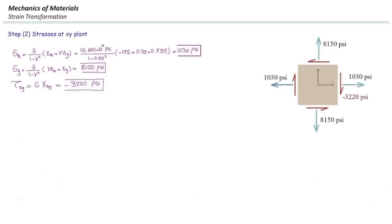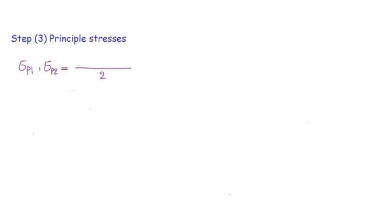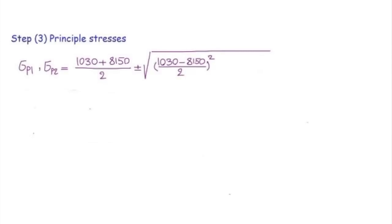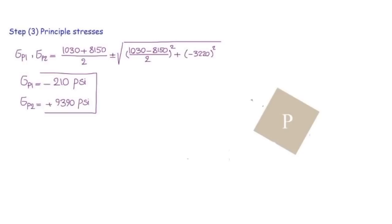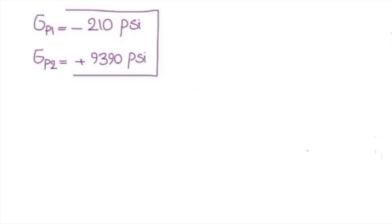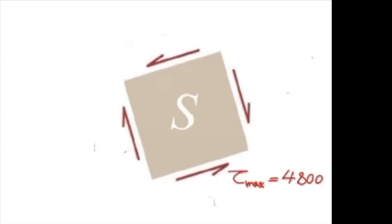Principal stresses are calculated from: σp1,p2 = (σx + σy)/2 ± √[((σx − σy)/2)² + τxy²]. Plugging in the values gives σp1 = +9,390 psi and σp2 = −210 psi. On the principal plane we have these two stresses with no shear stress, since it is the principal plane. The maximum in-plane shear stress is τmax = (σp1 − σp2)/2 = 4,800 psi, which can be drawn on that element.